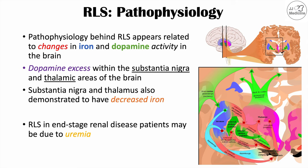In patients with end-stage renal disease, it is uremia — an increased urea in the blood — that appears to be the cause of restless leg syndrome in those patients.